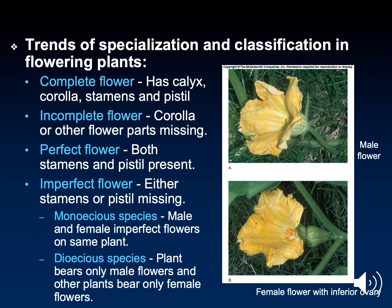When we covered the structure of a flower, we described all the parts a flower could potentially have: sepals, petals, stamens, and pistils. In a complete flower, all the parts are present. In an incomplete flower, one of those parts is missing. If the flower has both male and female parts — stamens and pistils — that flower is referred to as perfect. An imperfect flower occurs when there are only stamens or only pistils.